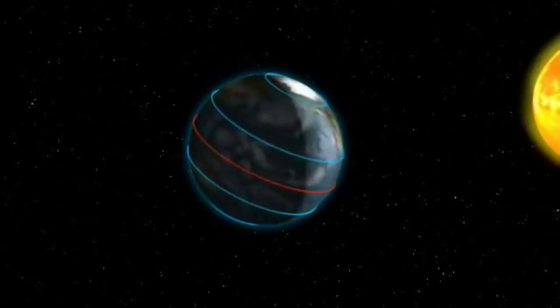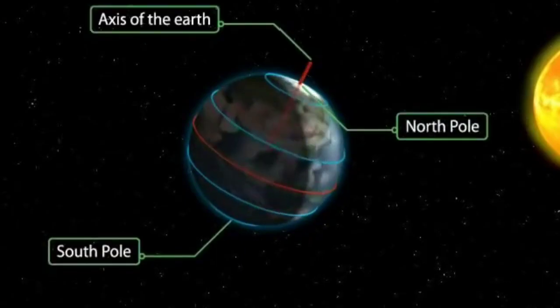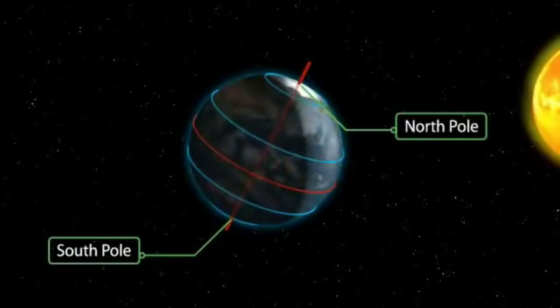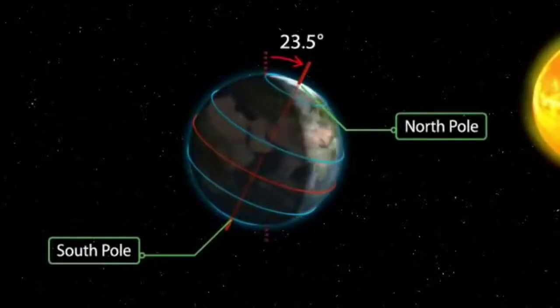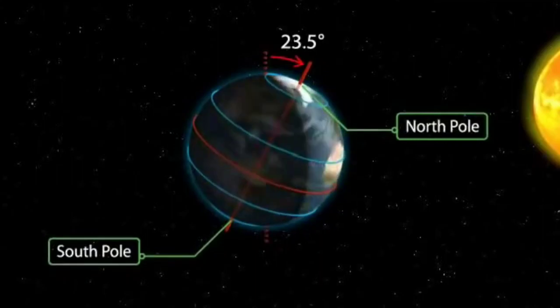The globes are mounted on an axis. Axis is an imaginary line passing through the North Pole to South Pole. Axis is actually the imaginary line passing through the North Pole to South Pole. It tilts the globe at an angle of 23 and a half degrees. Earth is tilted at an angle of 23 and a half.